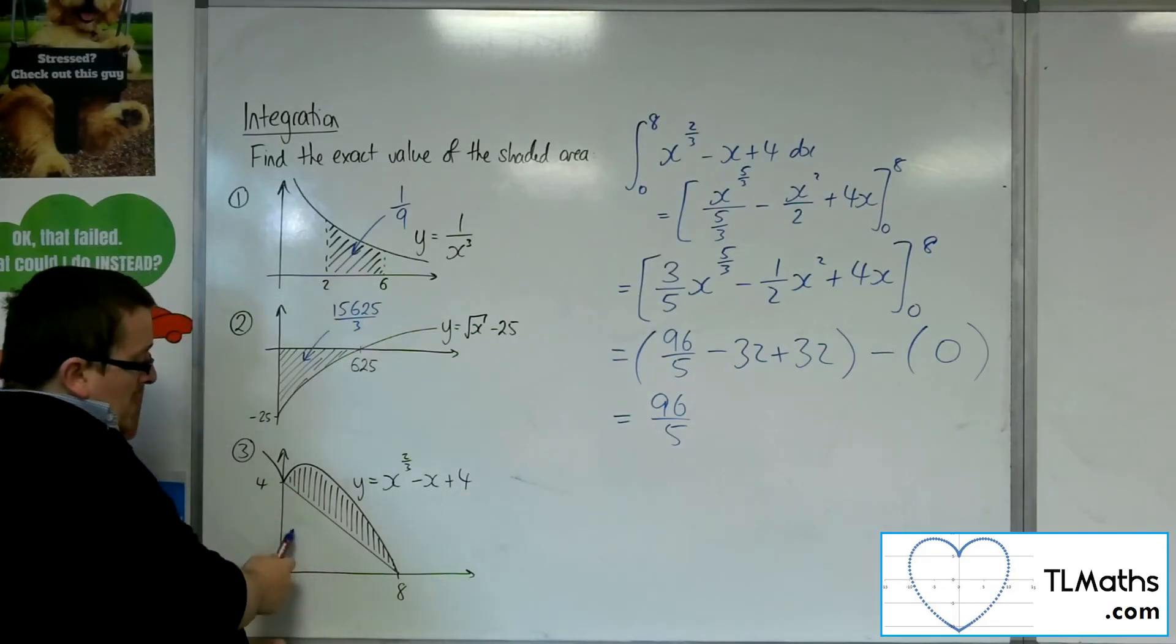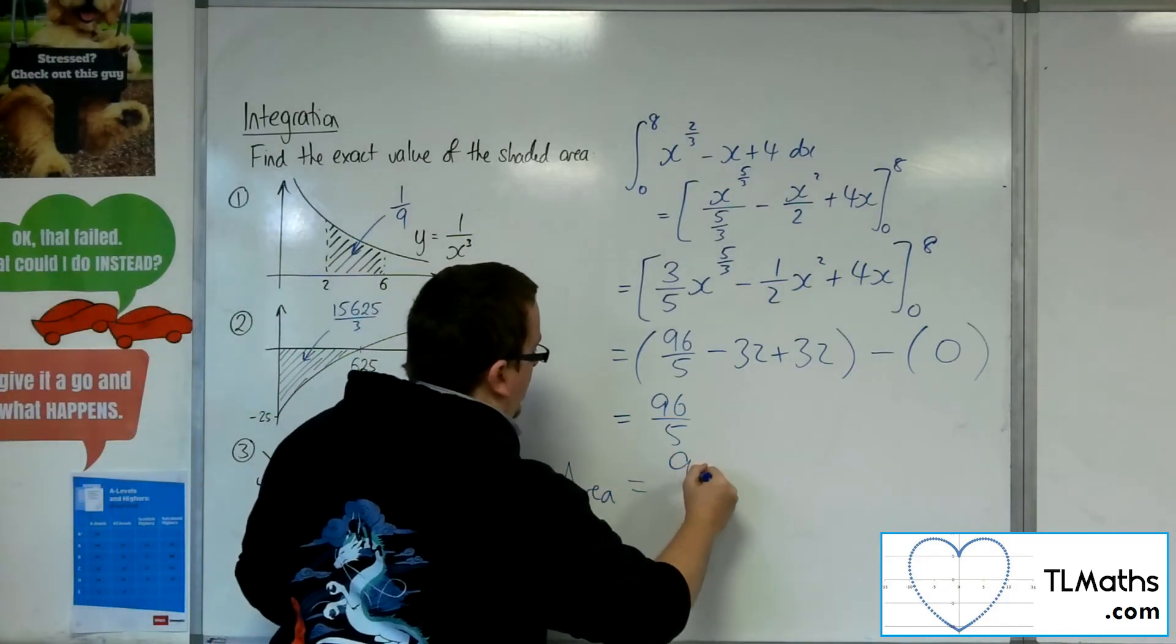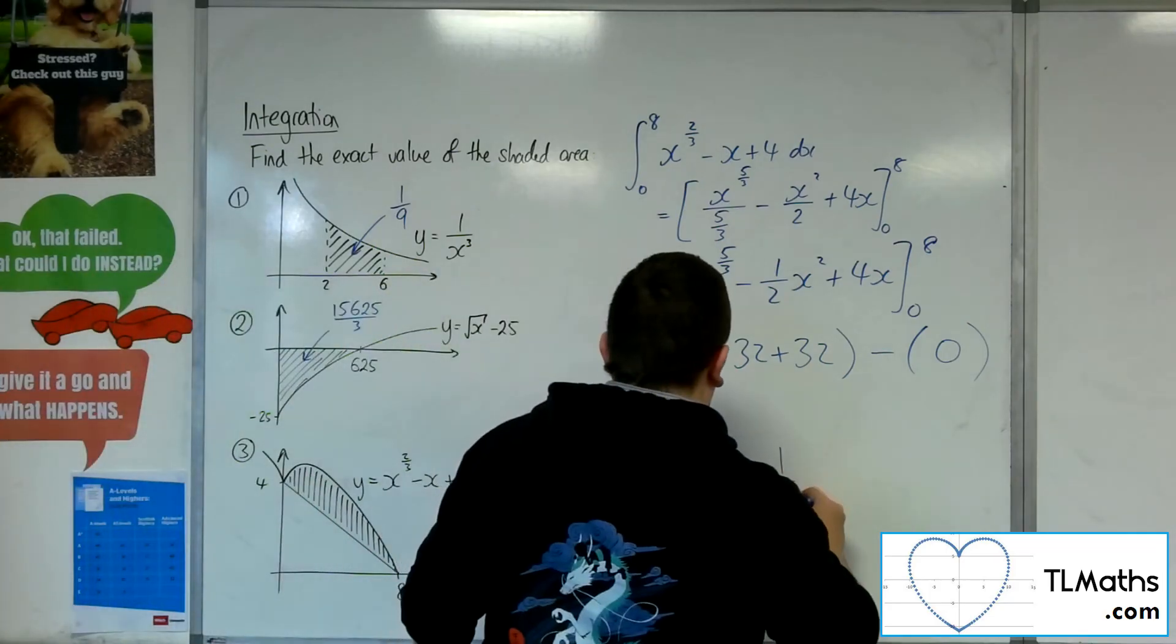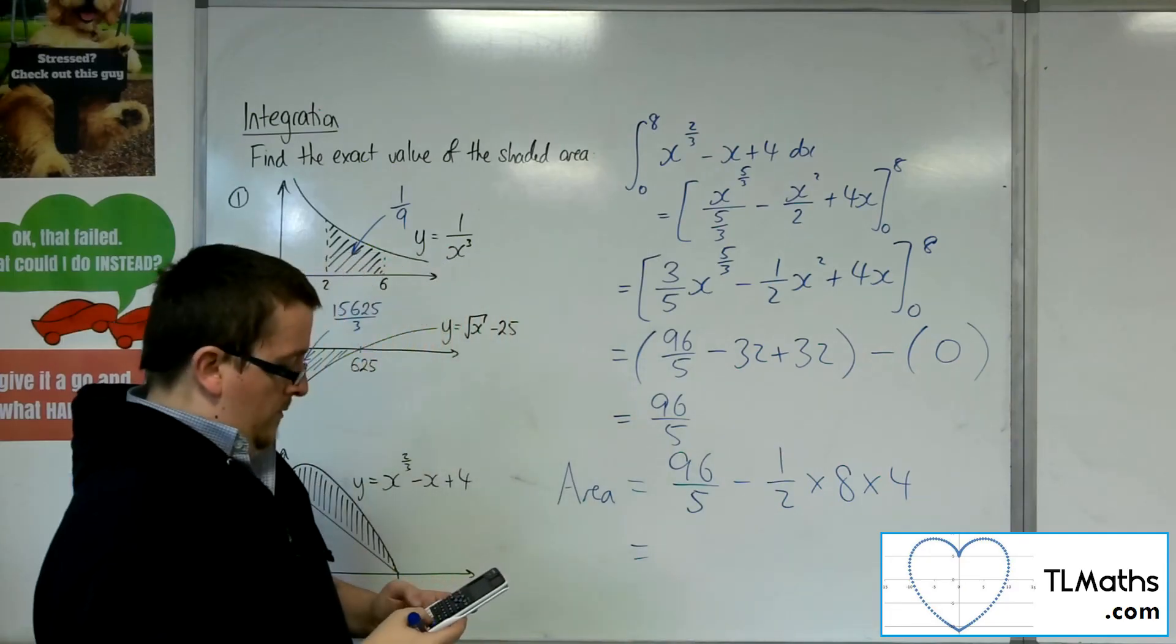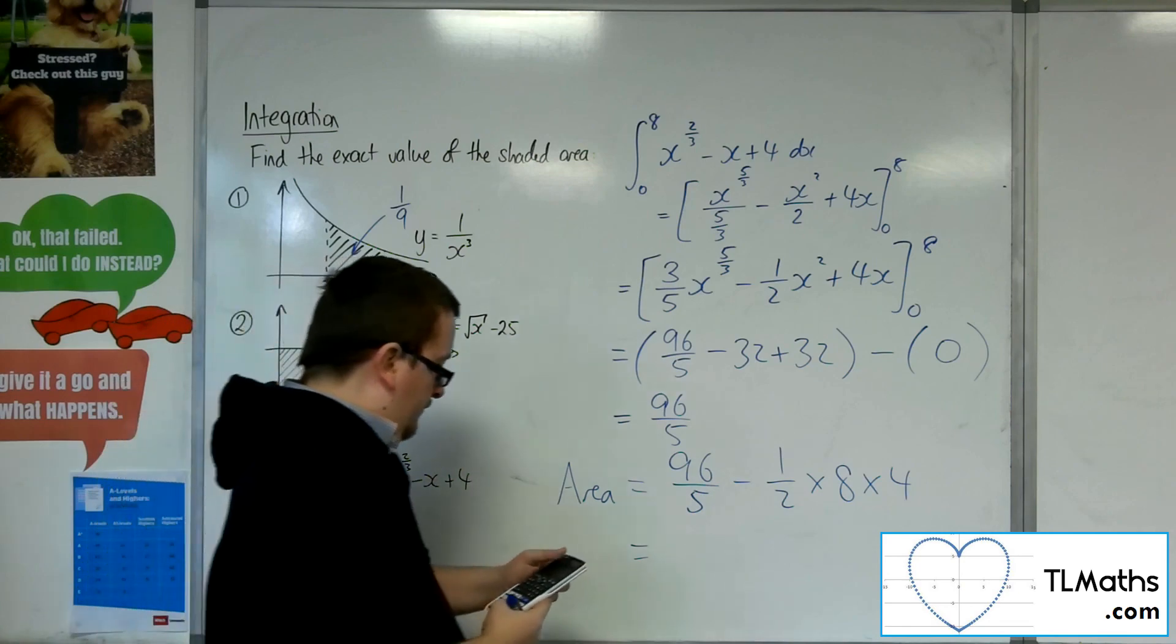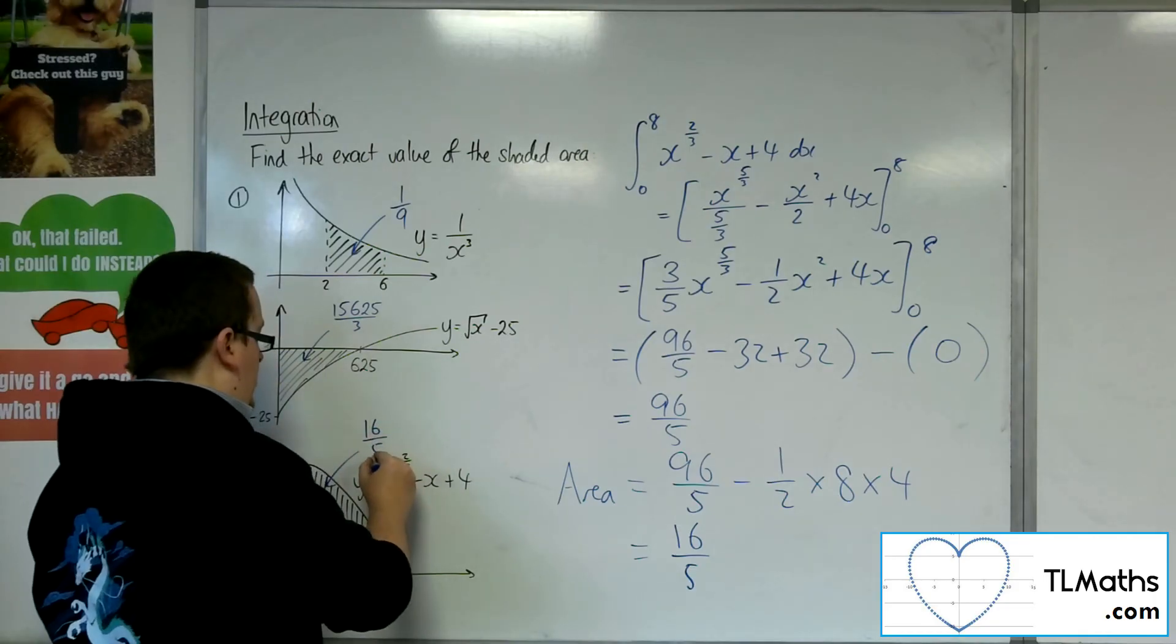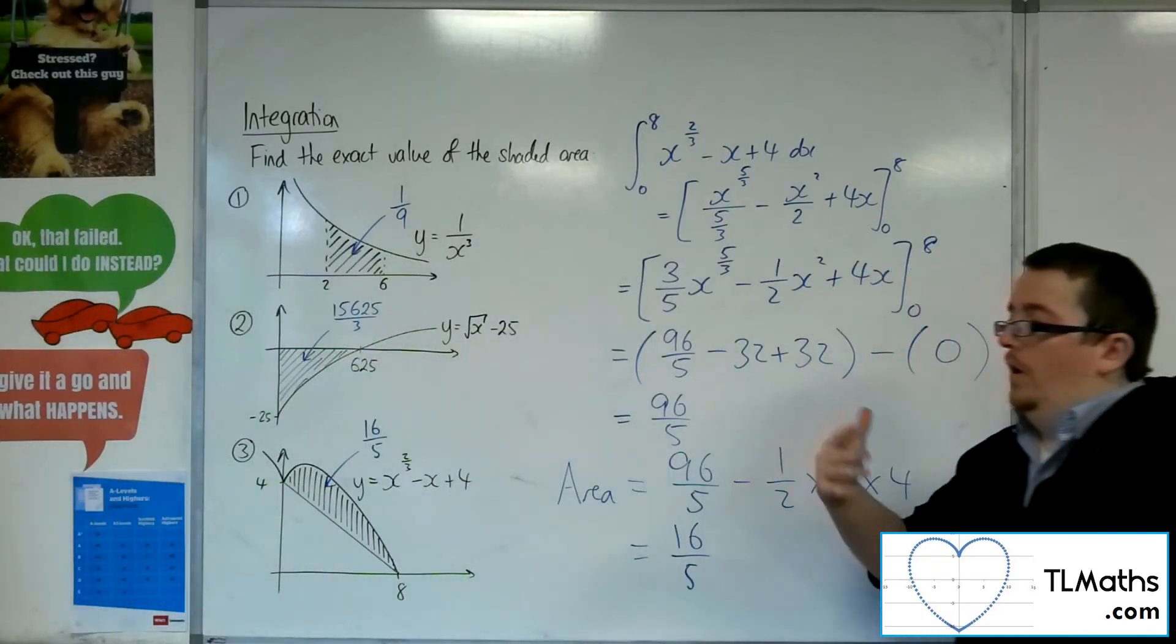So I want to subtract the area of the triangle. So the area that I want is 96 fifths, take away the area of this triangle. So it's 1 half times the base times the height. So 96 fifths, take away 1 half of 8 times 4. So that leaves me with 16 fifths. So that is the exact answer for number 3.